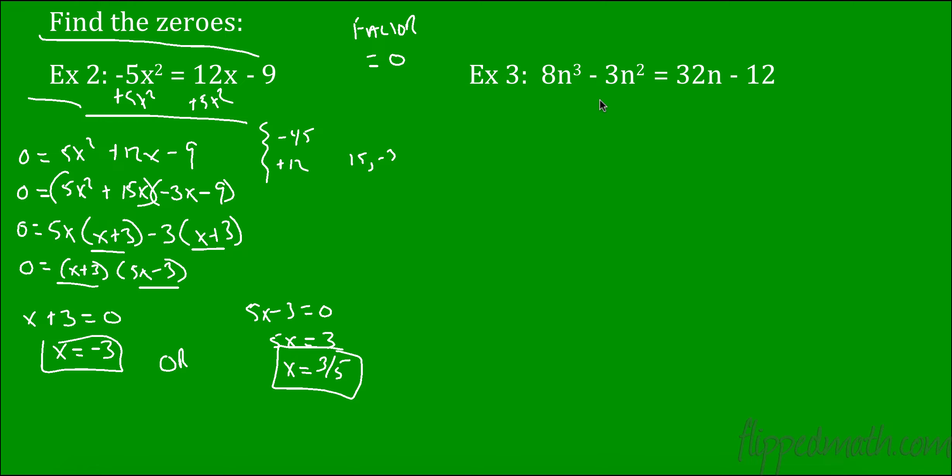So now we have 8n to the third minus 3n squared equals 32n minus 12. So again, we want to get our highest degree, make it positive. So it's to the third power. So I'm going to move negative 32n to the other side and I'm going to add 12 to the other side. So now I have 8n to the third minus 3n squared minus 32n plus 12 equals 0. I'm going to group right off the bat here because they have four terms. Here I can only take an n squared out, so that'll give me 8n minus 3. 32 and 12, I can take a negative 4 out, so that's 8n minus 3.